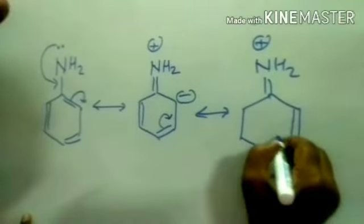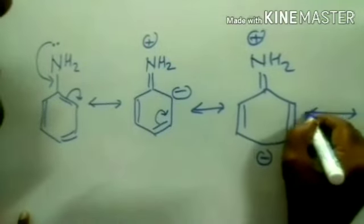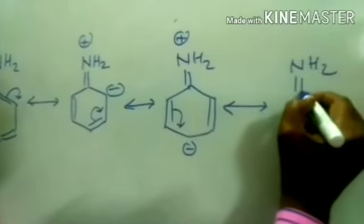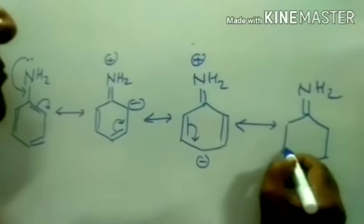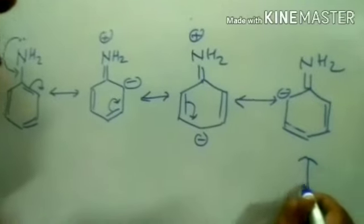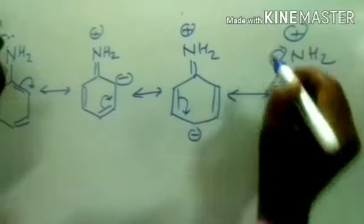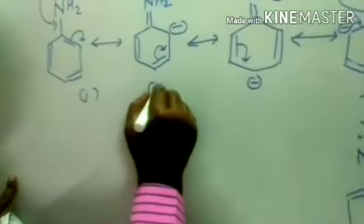Charge dispersal comes over here; again it undergoes delocalization. More resonating structures can be written. There are 5 resonating structures in total.